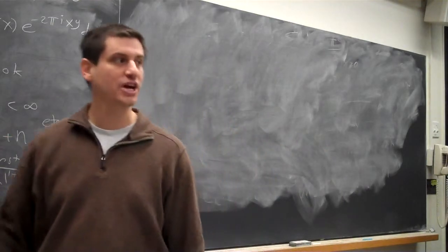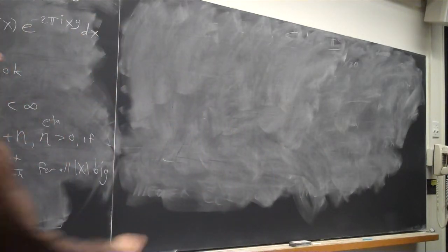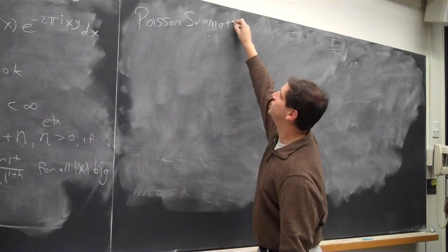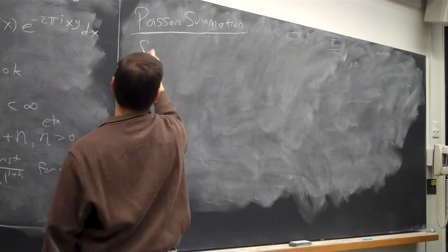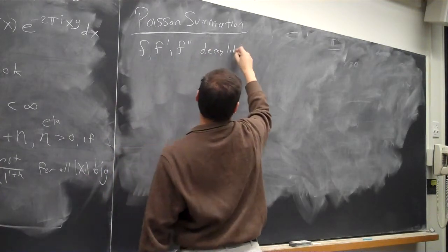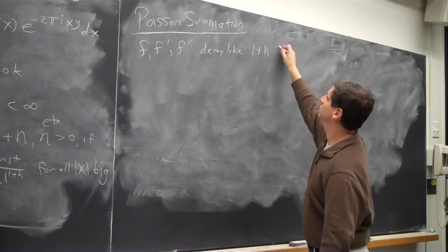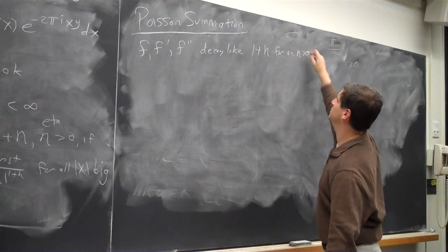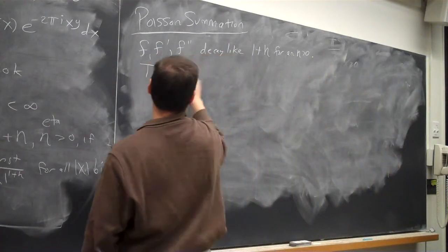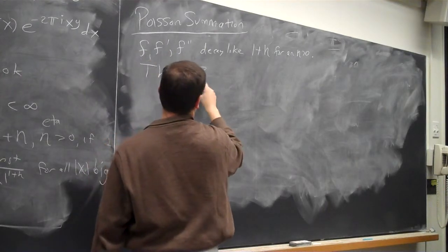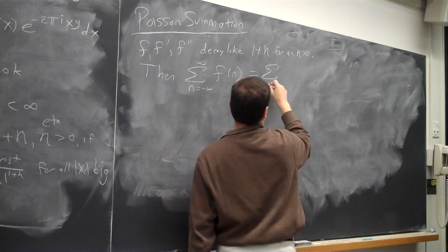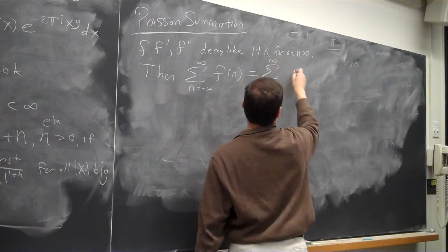And if I want things to converge, I need sufficient decay. So, Poisson summation, this is one of the greatest formulas in mathematics. So let's say F, F prime, F double prime, decay like 1 plus eta for an eta greater than 0. Then, the sum over all n, say minus infinity to infinity of F of n, is the sum, n goes from minus infinity to infinity of F hat of n.